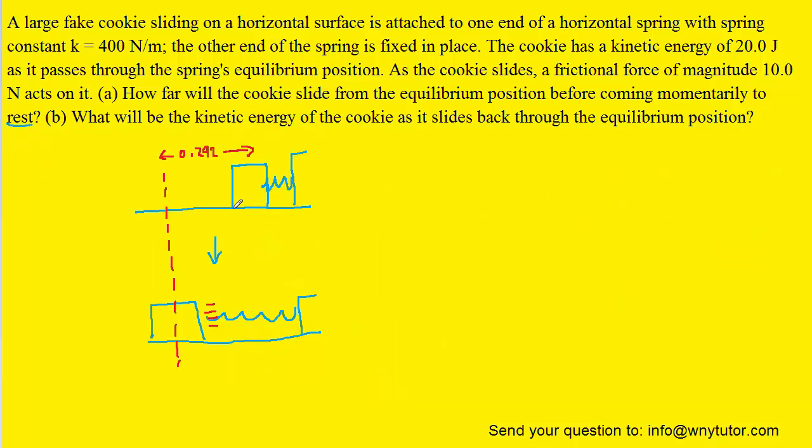So in part b of the question, remember that the cookie had just momentarily come to rest, and so now the initial kinetic energy would be zero. The spring is still compressed, so we still have some spring potential energy equal to one-half k times the distance squared. And then the cookie will be propelled forward by the spring, and it ends up moving. And as a result, there's going to be some final kinetic energy that we're going to be calculating.